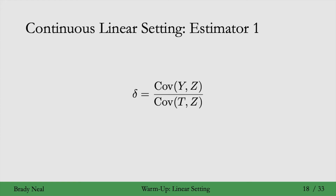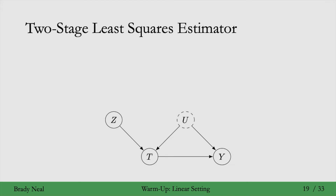We can use this identifying formula for estimation by just plugging in estimates of each of these covariances, giving us an estimate for delta. This is analogous to the Wald estimator. But another estimator that is more useful for giving intuition about why instruments work, and which is also very popular, is known as the two-stage least squares estimator.